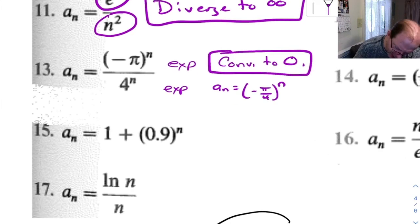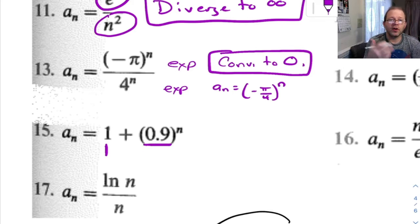And we can use that same logic here on 15. The a sub n is 1 plus 0.9 to the n. If you think about what happens when n goes to infinity, the 1 is going to just stay as 1. But this, over here, 0.9 to the n, when you start raising that to larger and larger powers, it's going to shrink to 0. So this is going to converge to 1.